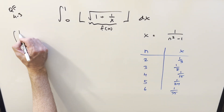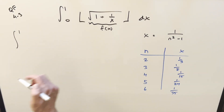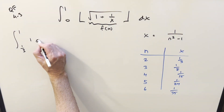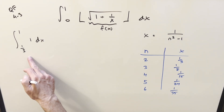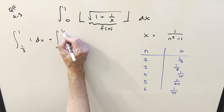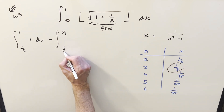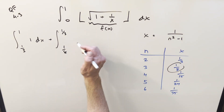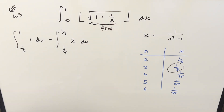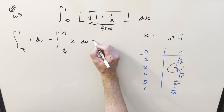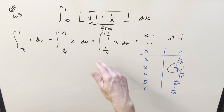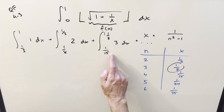Starting from 1 and going down to 0, the first integral goes from 1 to 1 third, and everything in this region simplifies to 1 — f of 1 half was 1, f of 1 was 1. The next integral goes from 1 third down to 1 over 8, and everything here reduces to 2; for example plugging in 1 over 4 gives the square root of 5, around 2.2, which floors to 2. Then 1 eighth to 1 over 15 gives 3. This continues with infinitely many integrals whose bounds approach zero.